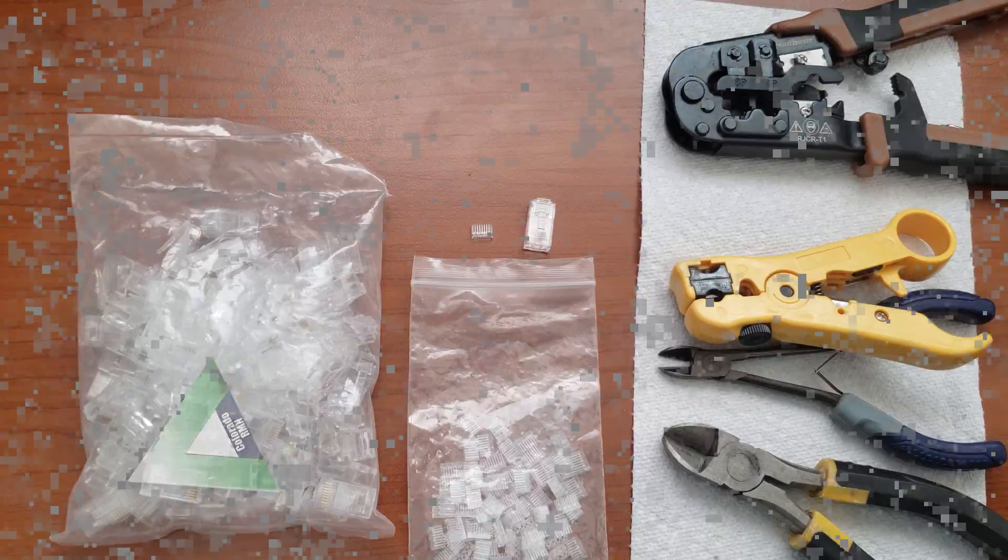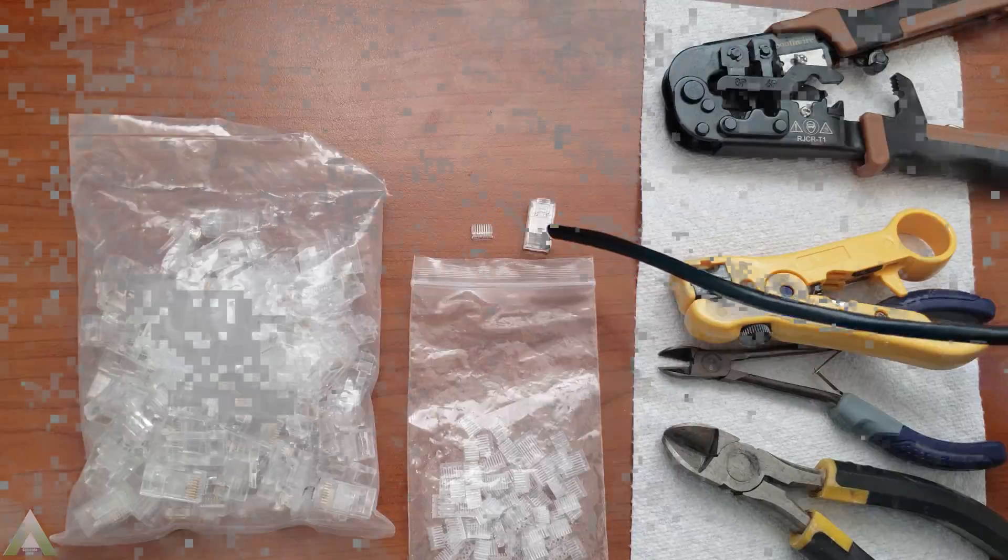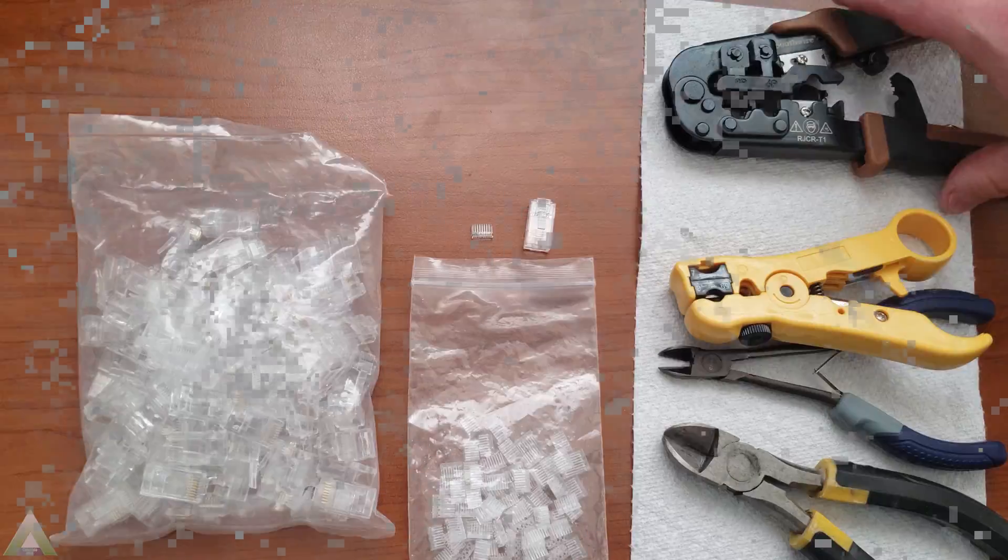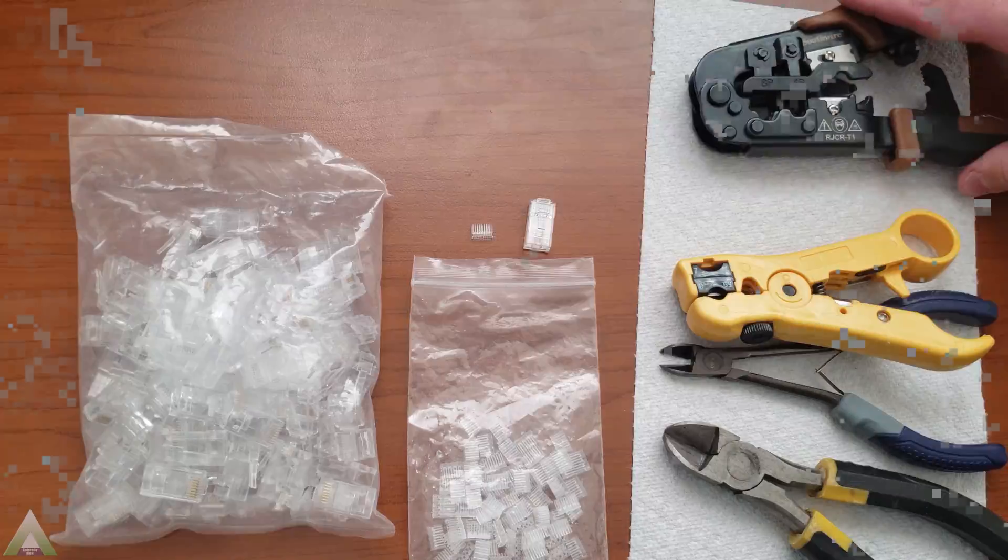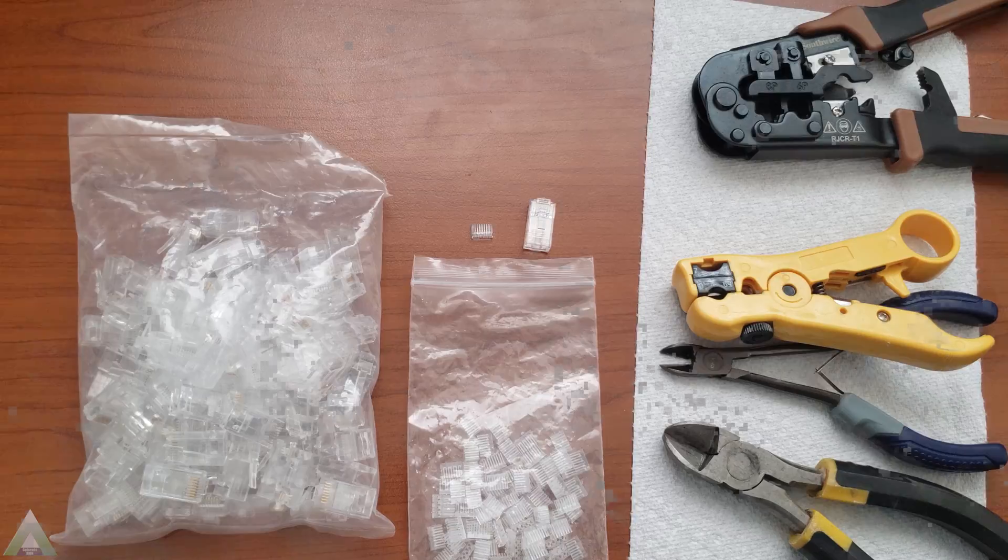Howdy folks! In today's video we'll learn how to make a Cat 6 Ethernet cable. We'll use the two-piece Ethernet cable connectors and the only tool you really need is a crimping tool. Everything else you can improvise and use any tools that you may already have throughout the house. Let's get started.